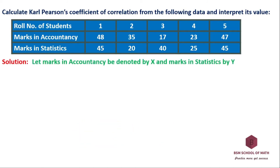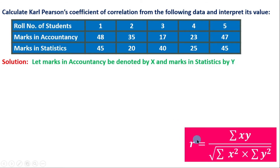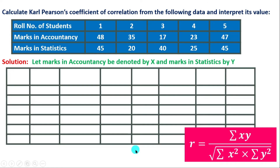We denote accountancy marks as X and statistics marks as Y. The formula is: r is equal to summation of small x into y, divided by the square root of summation x-squared into summation y-squared. We will compute the small x, small y, x-squared, y-squared, and xy columns.